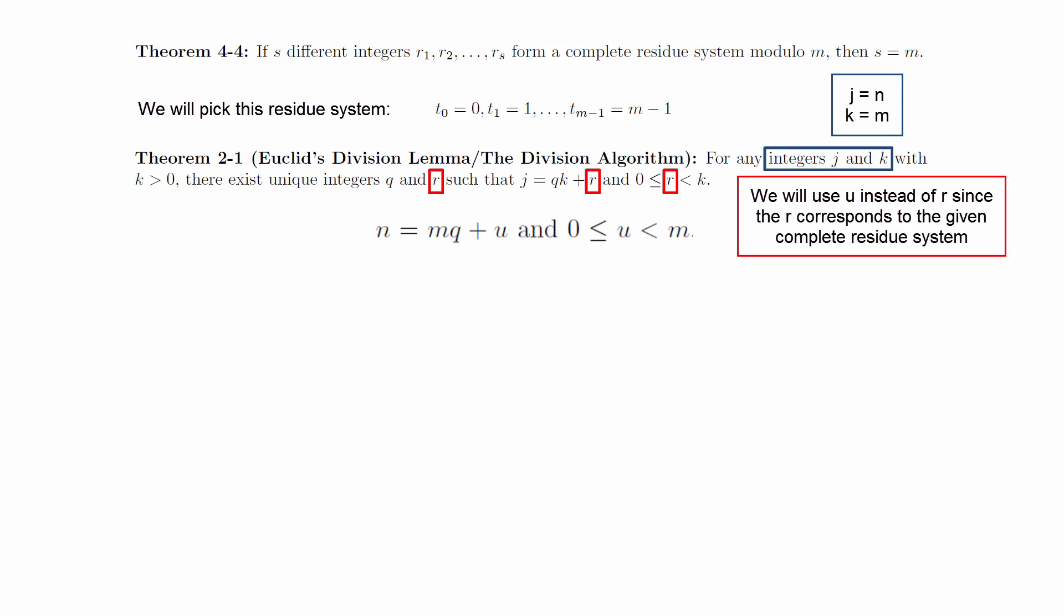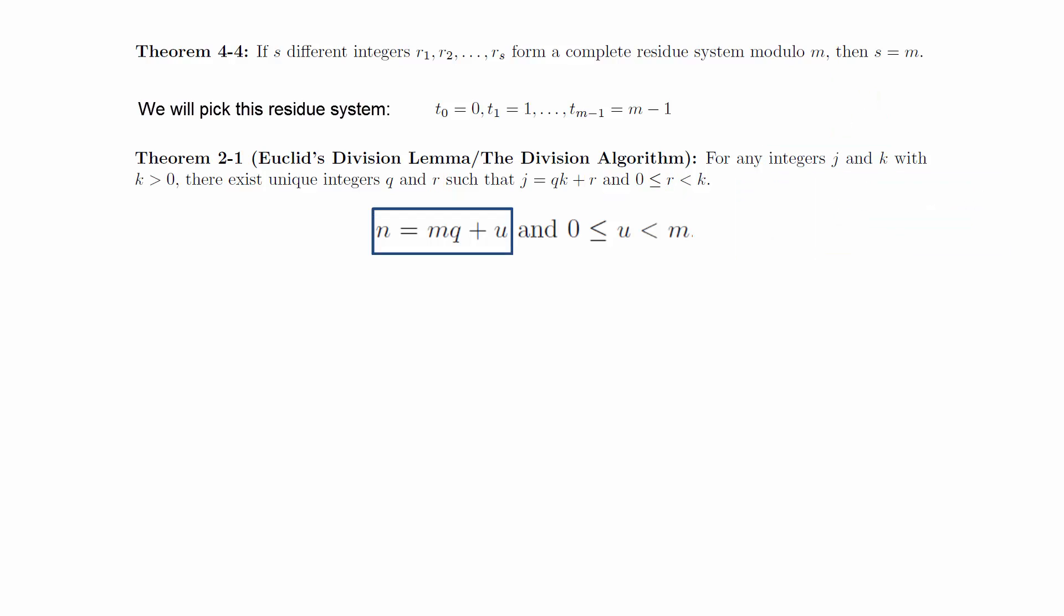We still need to prove that this works as a complete residue system. For any integer n, we can use the division algorithm to generate unique integers q and u such that n equals m times q plus u, and 0 less than u less than m. This shows that n is congruent to u mod m, and that u is one of the t sub i.